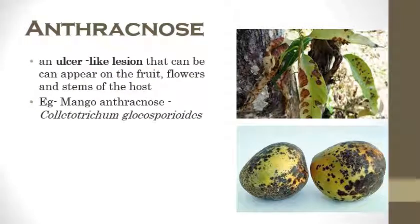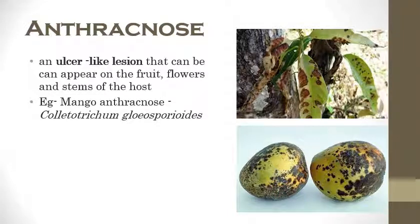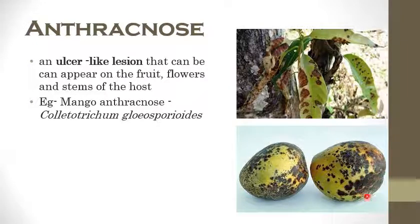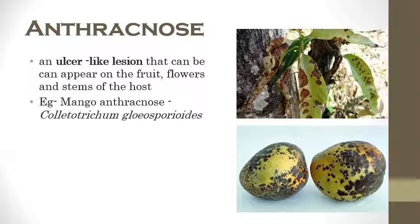The next one is anthracnose. The most prominent and diagnostic symptom is ulcer-like lesions, which can be observed on fruits, leaves, and stems of the host. On the right side we can see ulcer-like lesions on mango. We mainly consider the lesions on fruits since they are the main part for marketing. The example is mango anthracnose which is caused by Colletotrichum gloeosporioides.